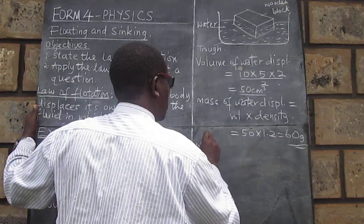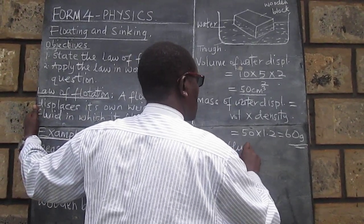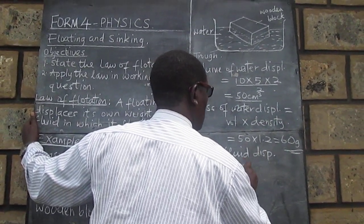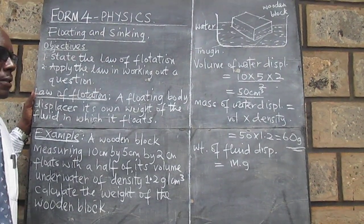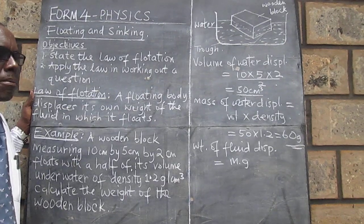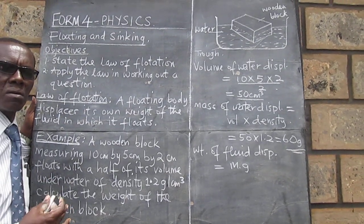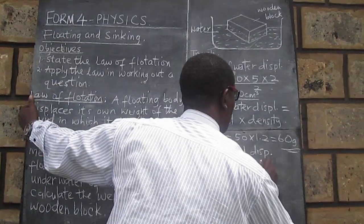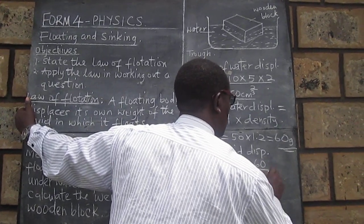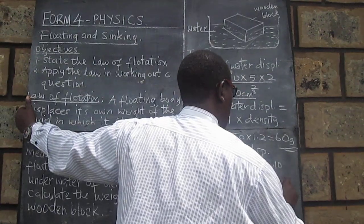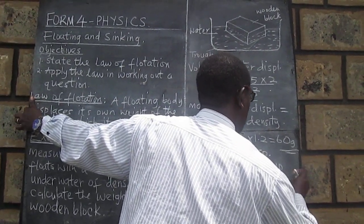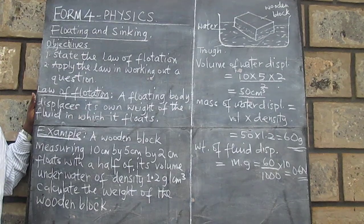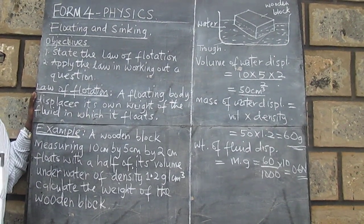And therefore weight... We remember that weight is mass times force of gravity. And now that we have the mass in grams, we must remember to convert that to kilograms, and then multiply by the acceleration due to gravity. So the weight of the fluid displaced equals 0.6 Newton.